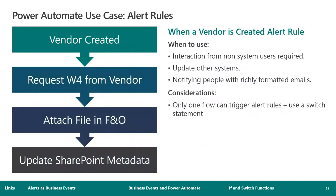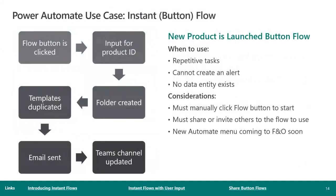Power Automate flows can also be triggered by the business event associated with alert rules. You need to make sure your alert is marked as 'send externally' so that the alert triggers the event, and then use the associated template to get started. Remember there are some limitations — you can only create alerts for the primary data source on a page. In this example, when a vendor is created, we're requesting a W-9 from the vendor, attaching that file in Finance and Operations, and then updating some related SharePoint metadata.